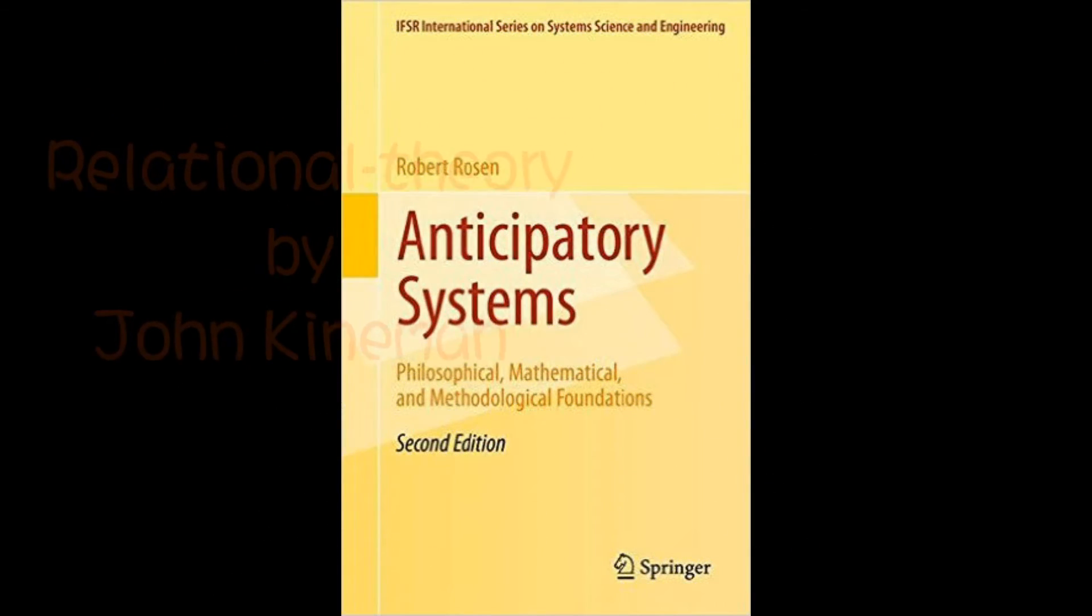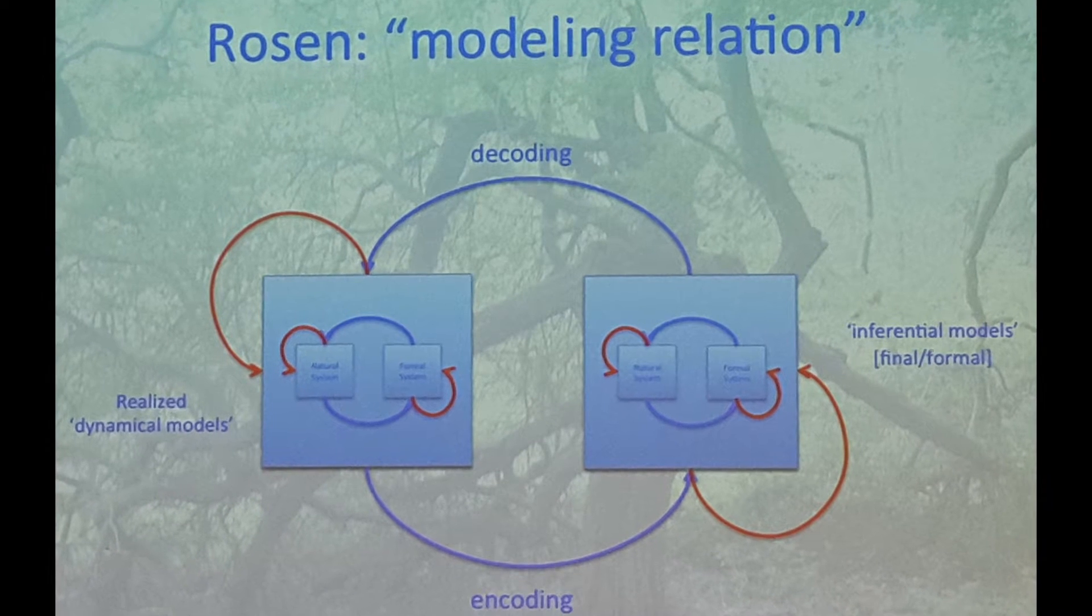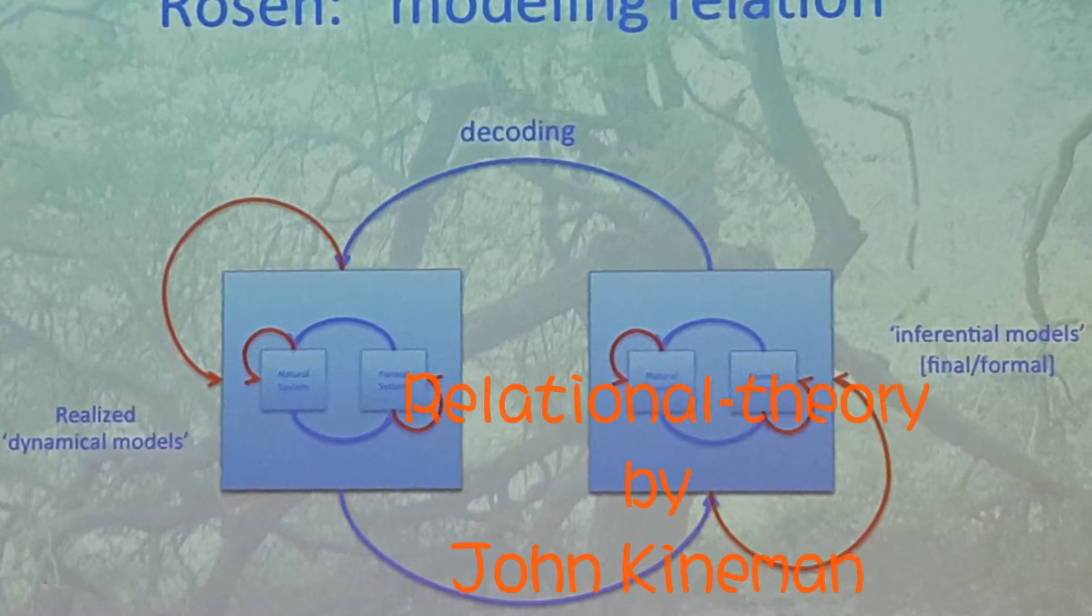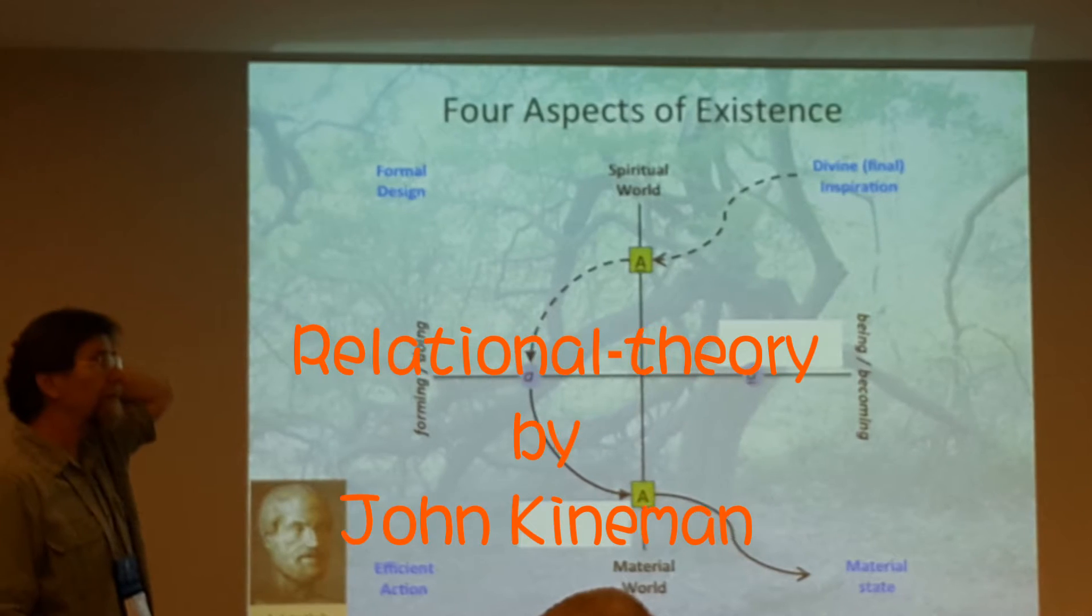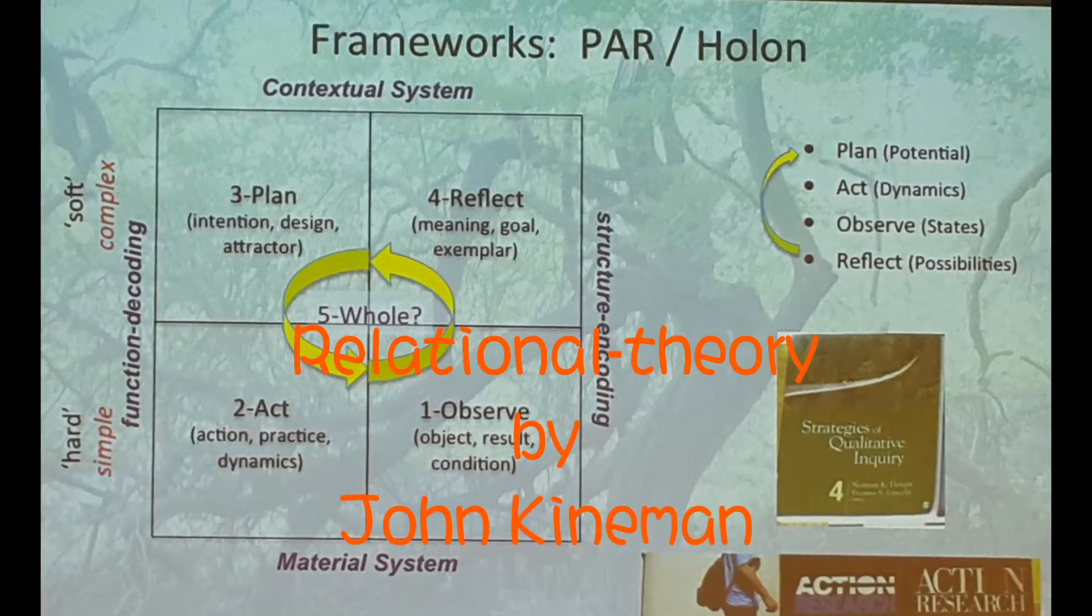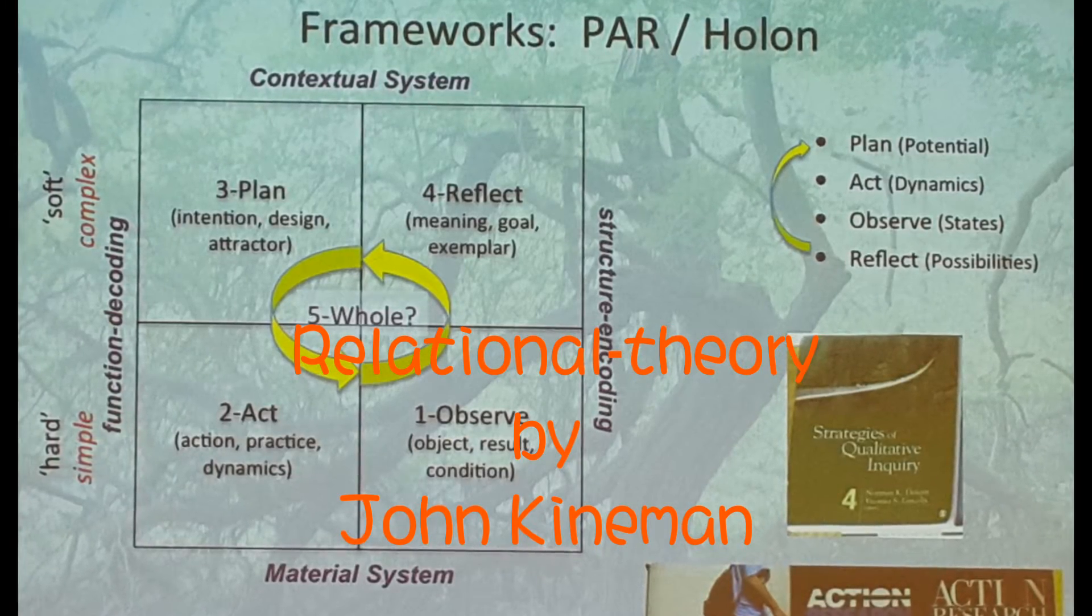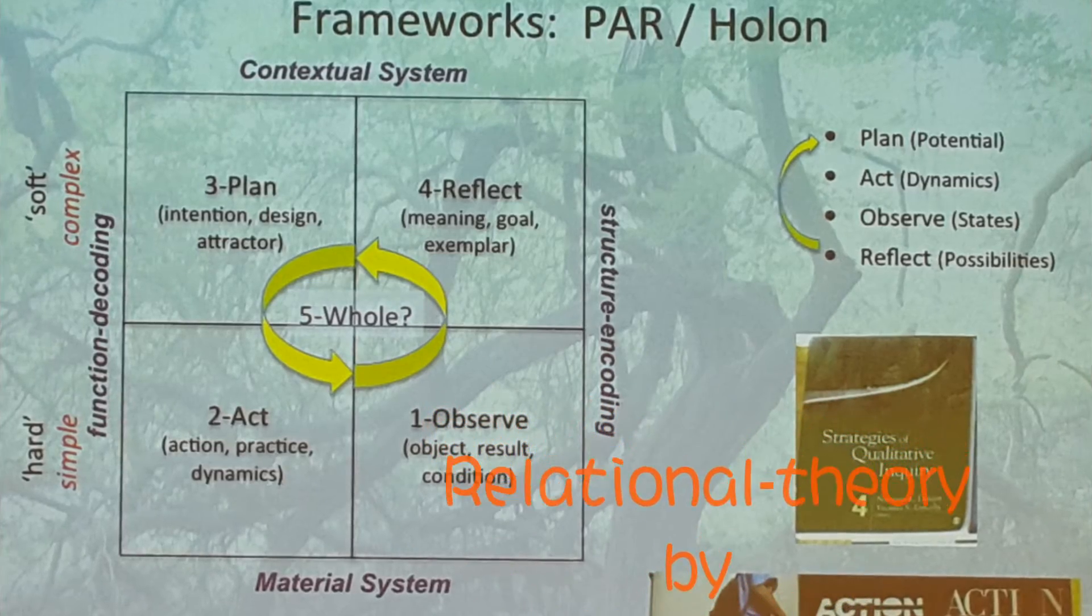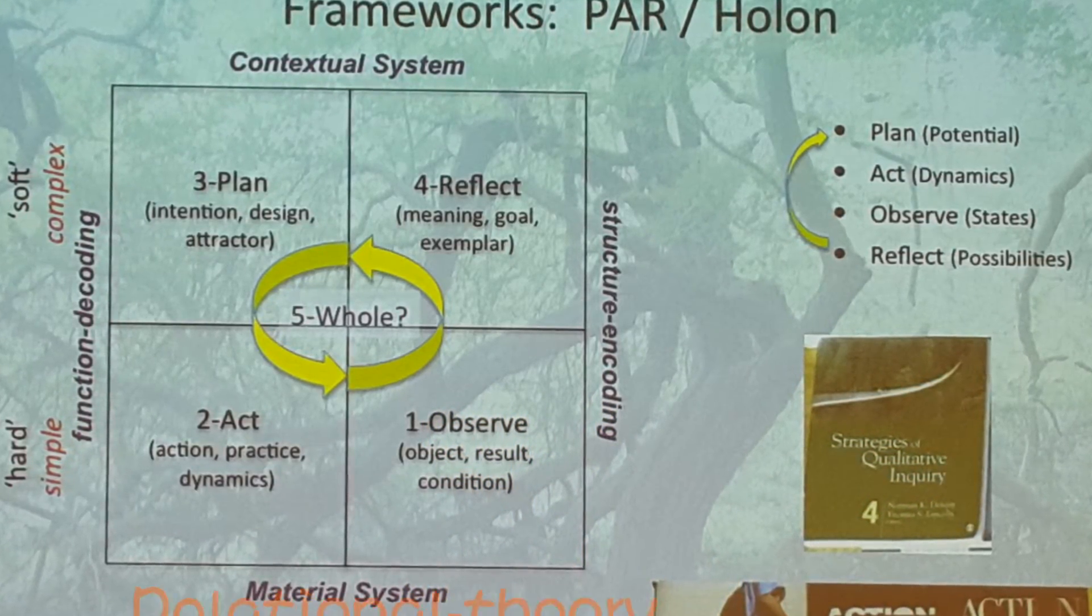Let's go to another point of view: relational theory, which is derived from the anticipatory system by the Rosen family. In the 2013 workshop by John Kineman and Judith Rosen, we concluded and found five elements with similar properties. Interesting.